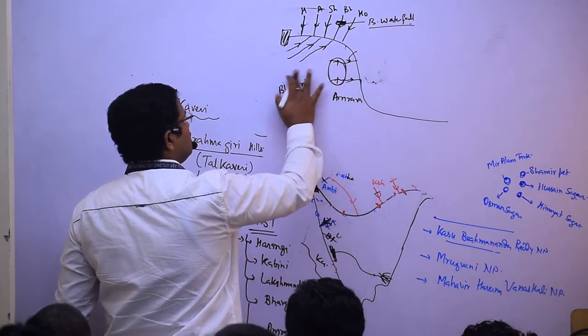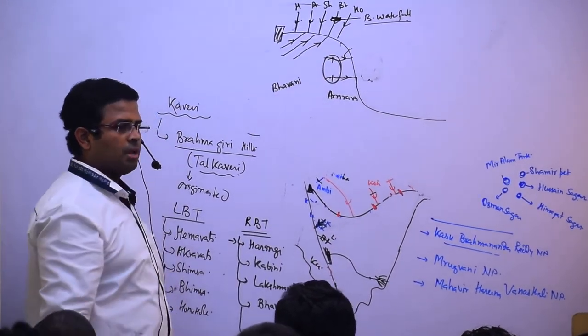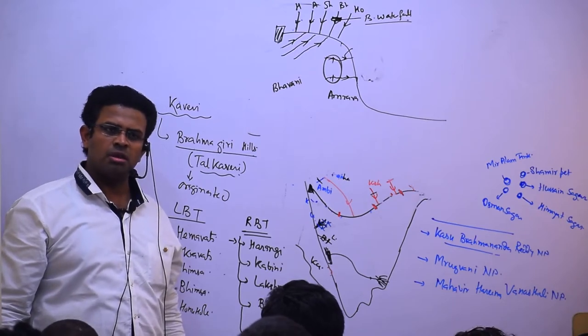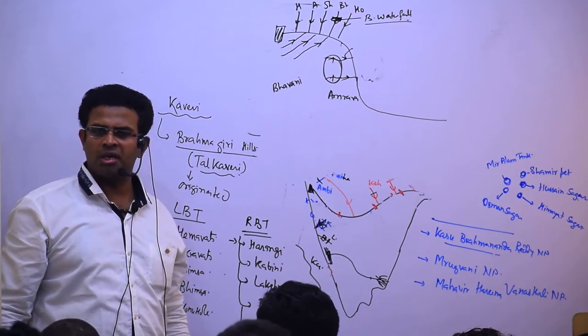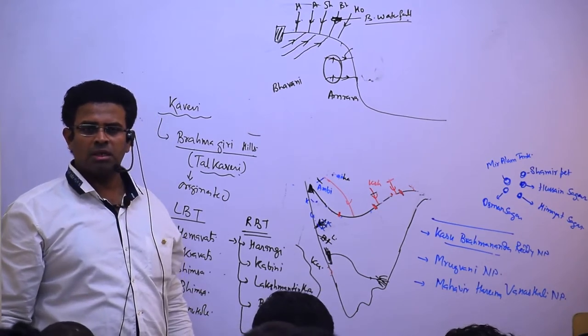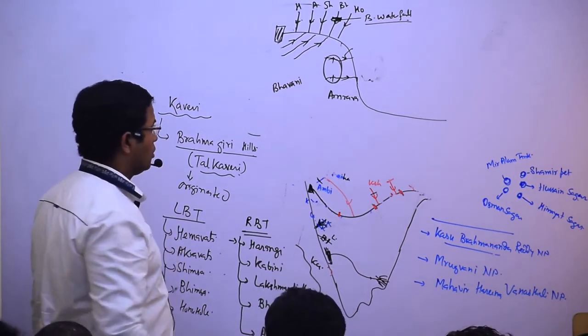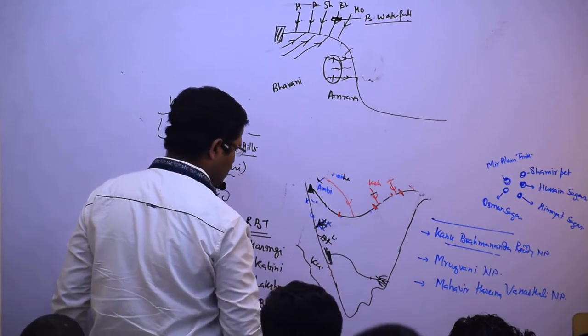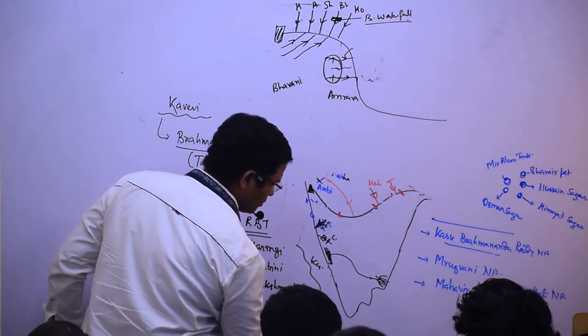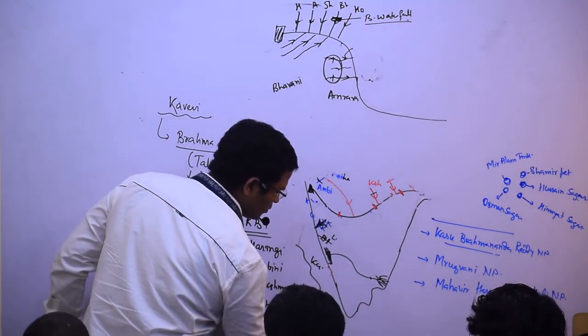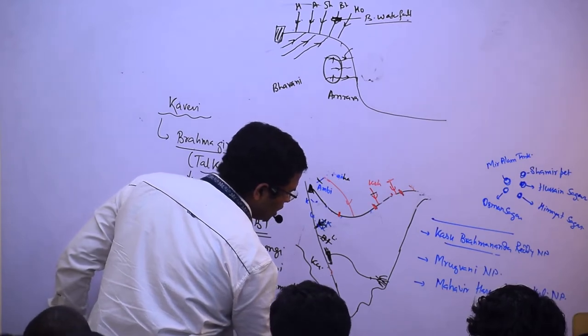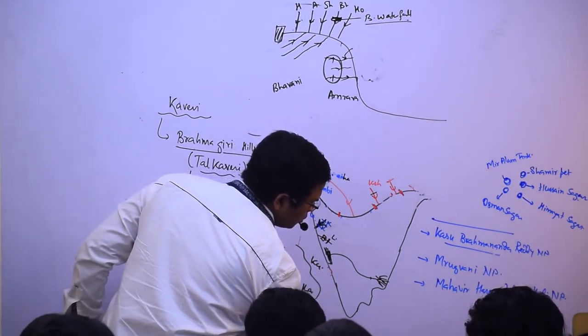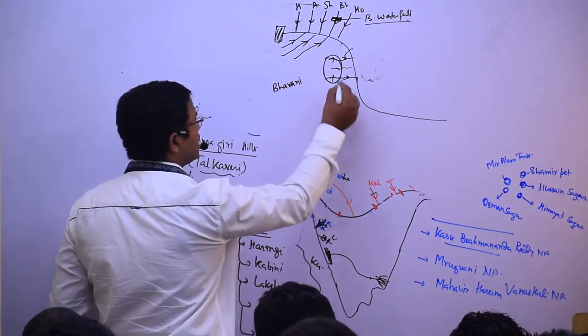What's the importance? Through the dam there's electricity production and irrigation. The Coimbatore district which is not getting rainfall will get irrigation. In between there's Siruvani river, which has Siruvani water.